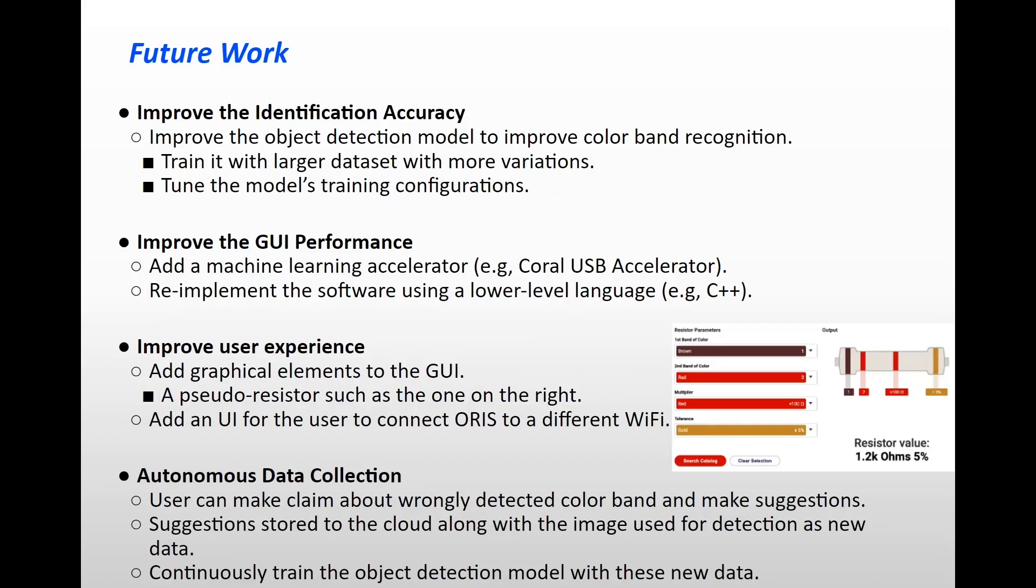For future work, we will focus on how to improve the accuracy, performance, and the user experience of the ORIS system. Since our identification accuracy does not achieve 90%, therefore, we should increase identification accuracy by improving the object detection model to improve color band recognition. We can increase the size of the training dataset to include a large variety of resistors and different surrounding environments, so that the model can learn the appearance of different color bands on differently made resistors under different lighting conditions. By that time, training configurations should be further tuned for the corresponding scenarios.